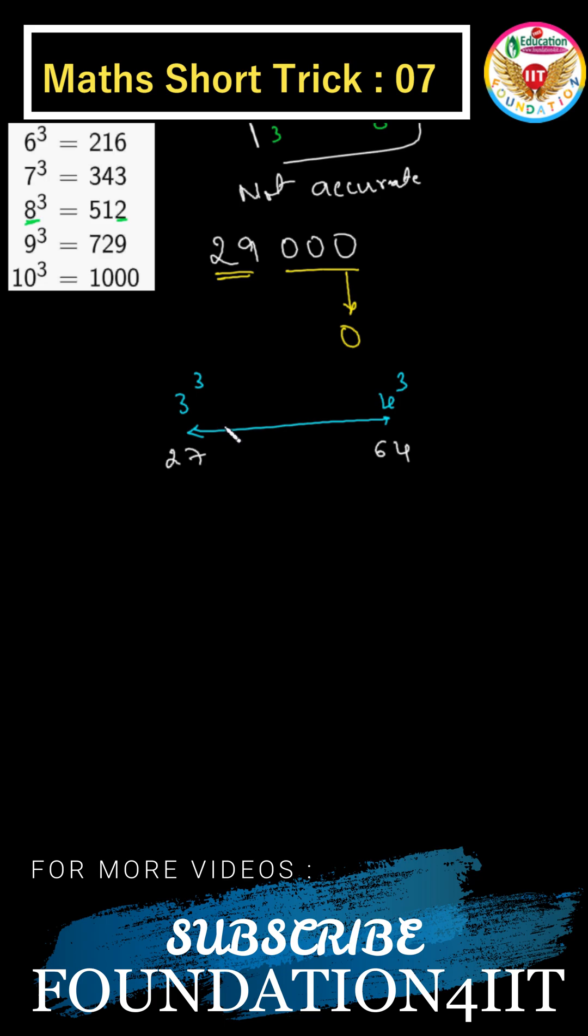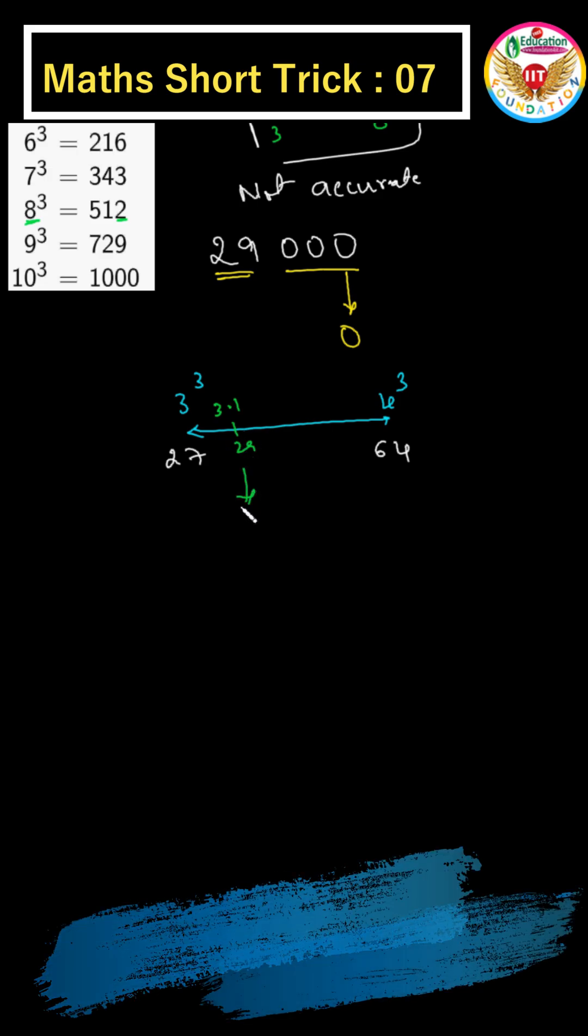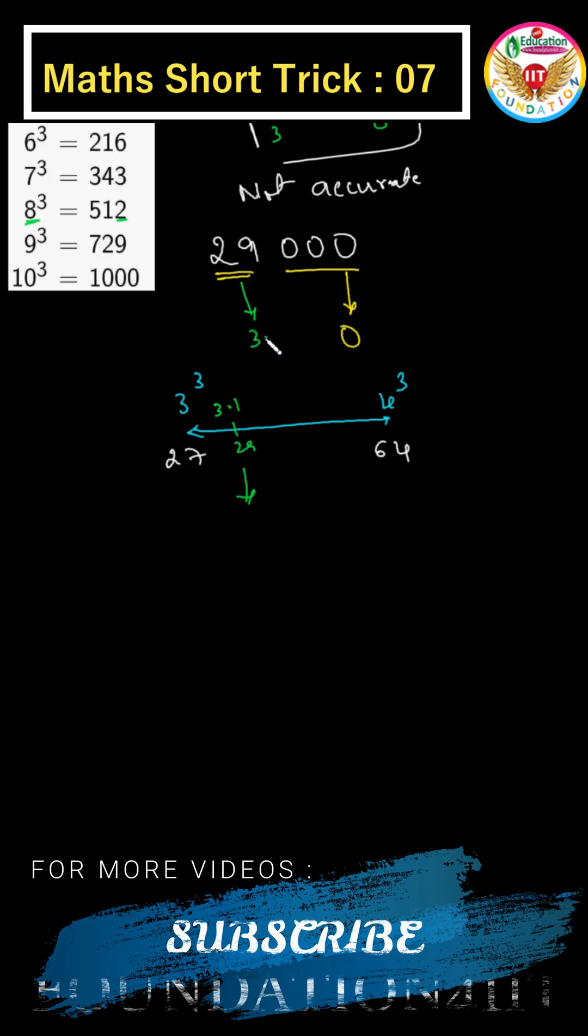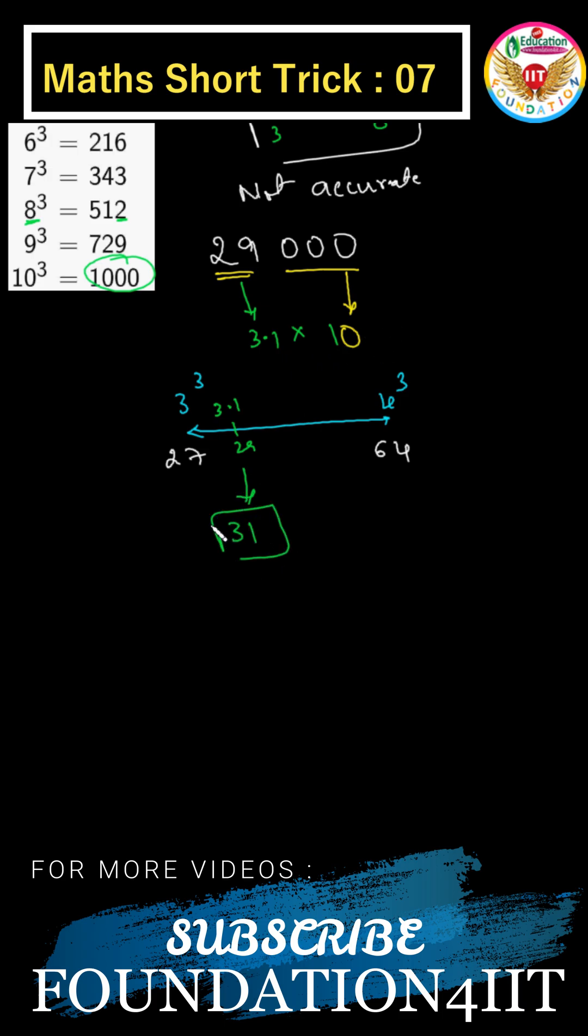After somewhere 29, between 3 and 4, it is very 0.1 difference, very close because 27 to 64. 3.1 you can take approximately. In the place of this, you can take 3.1 times 10, because 1000 ends with 10. 3.1 into 10, that is 31 is the approximate.